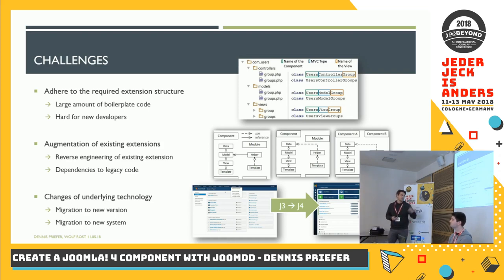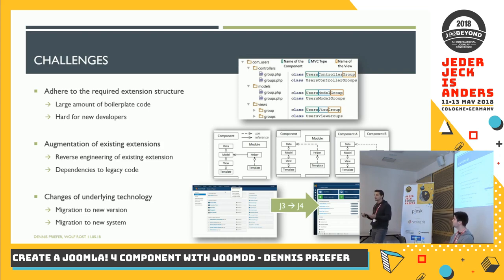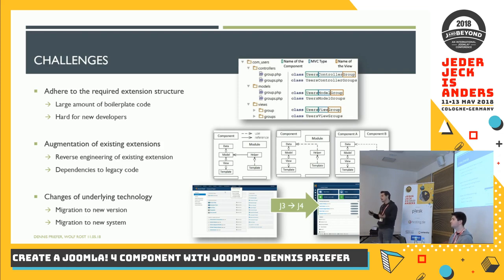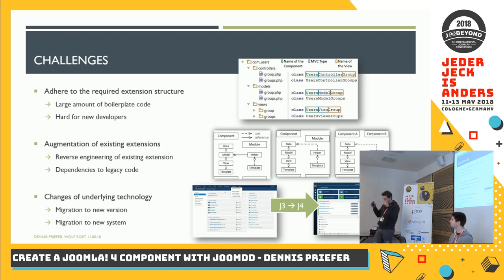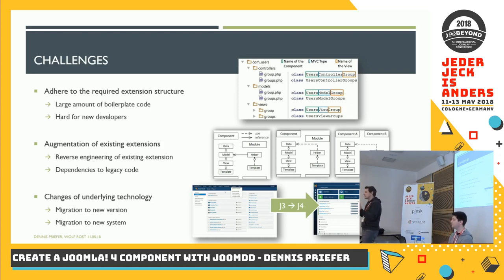The last big challenge during development is migration to new platform versions of Joomla. We developed extensions for Joomla 1.0 and had to migrate to 1.5, then 1.6, 1.7, 2.5, and 2.3. Every time we required a lot of time. We had a lot of developers in our institute at university, and we figured out that we need something to help us and support us during the development and maintenance of our extensions.